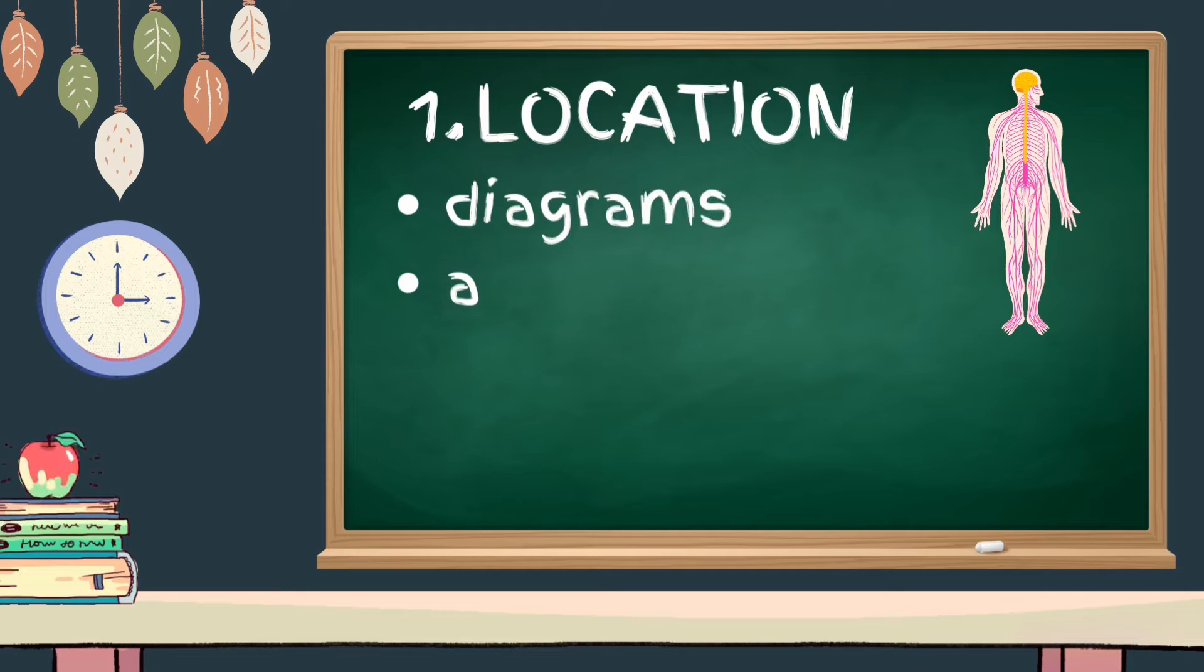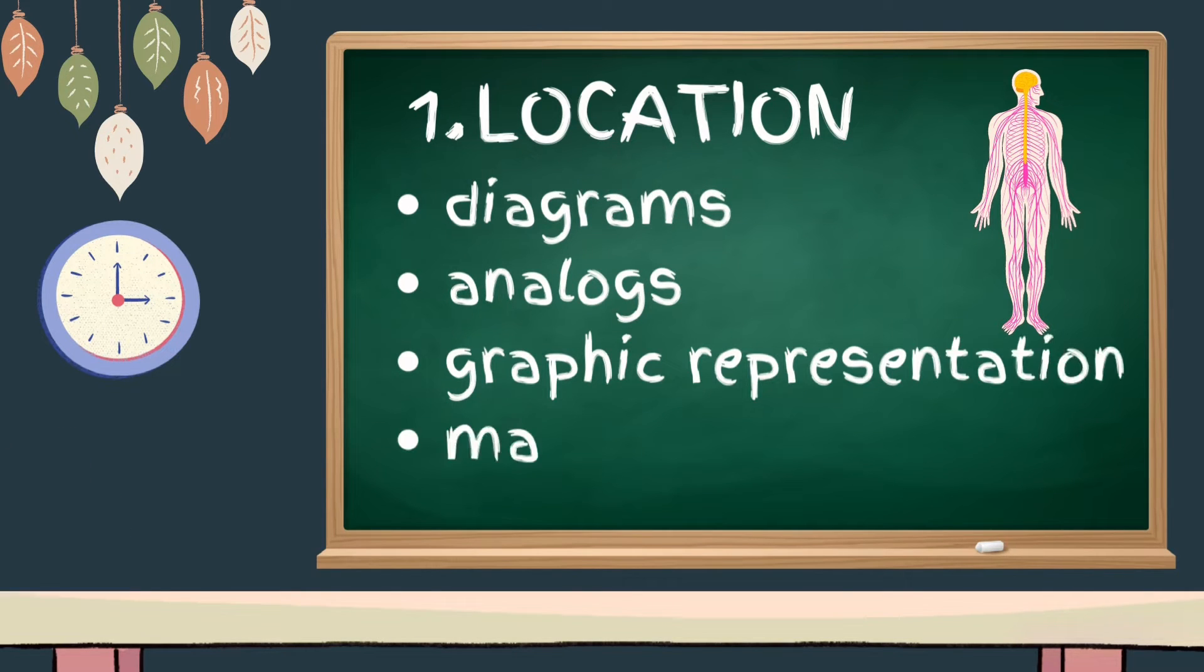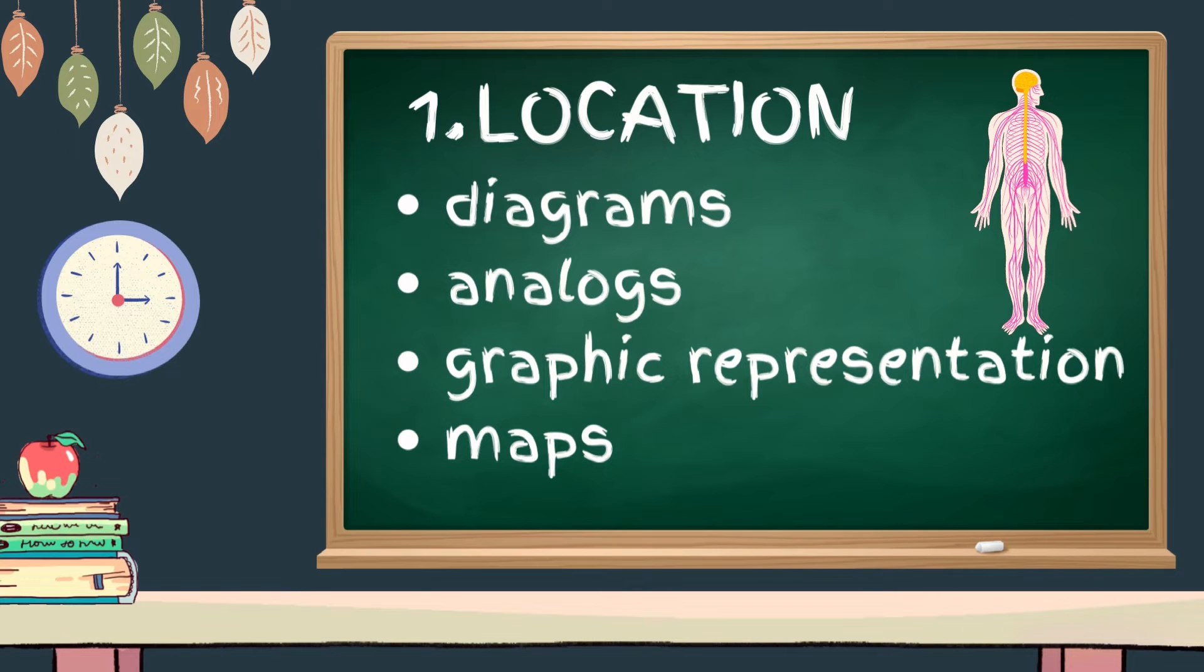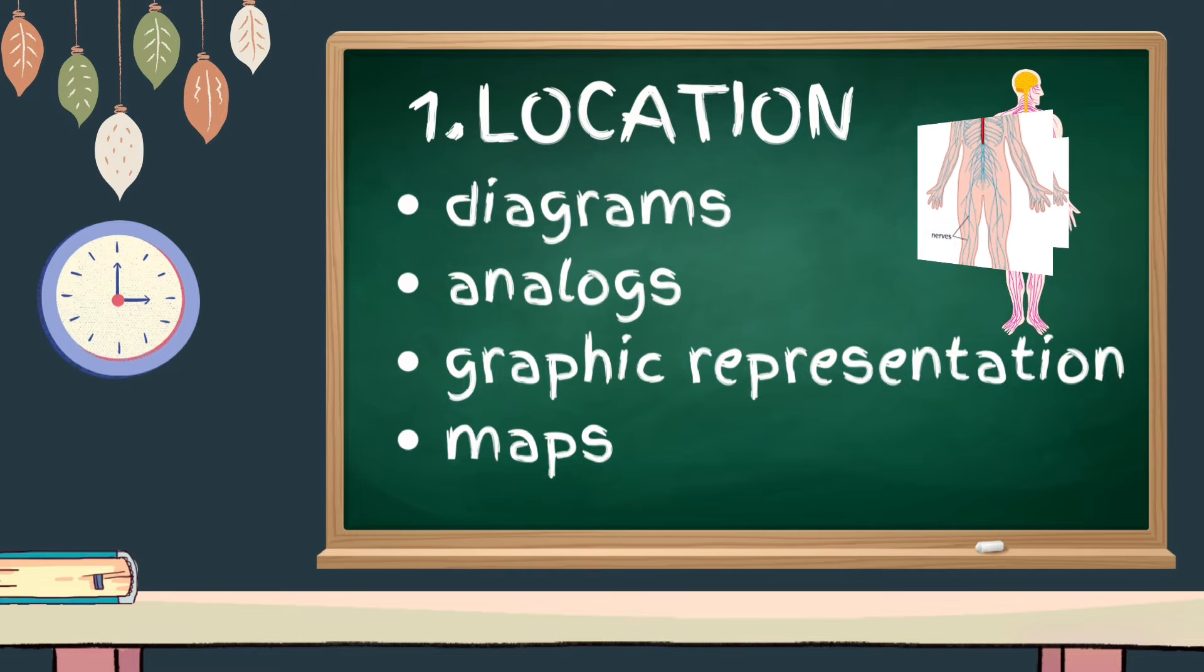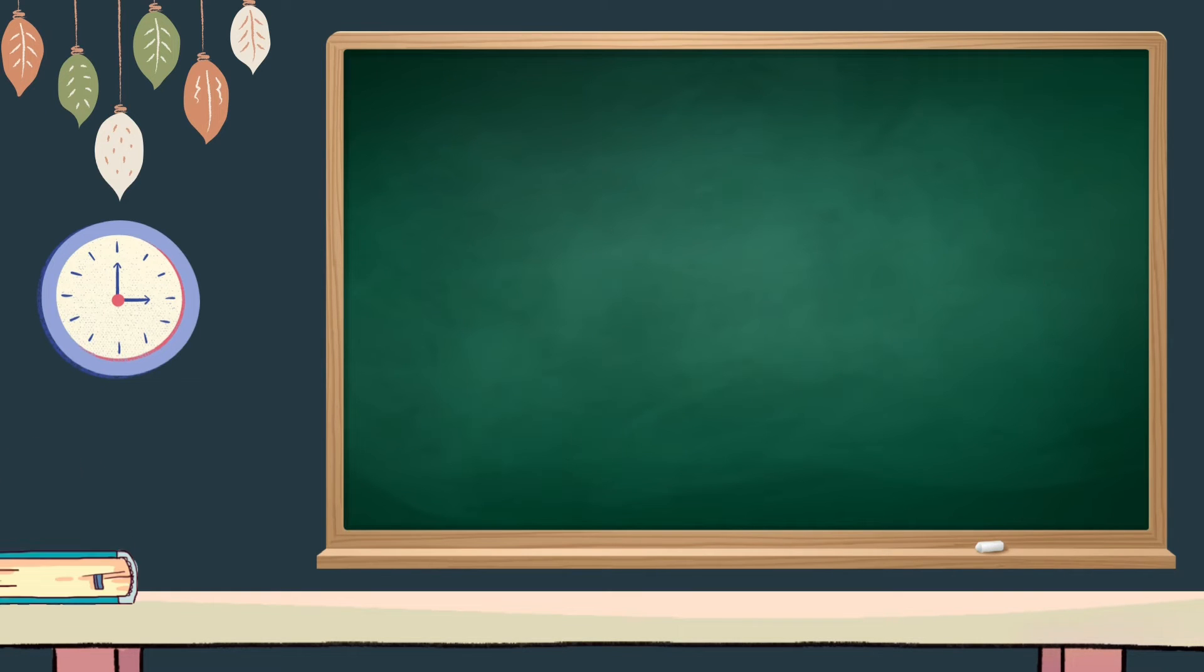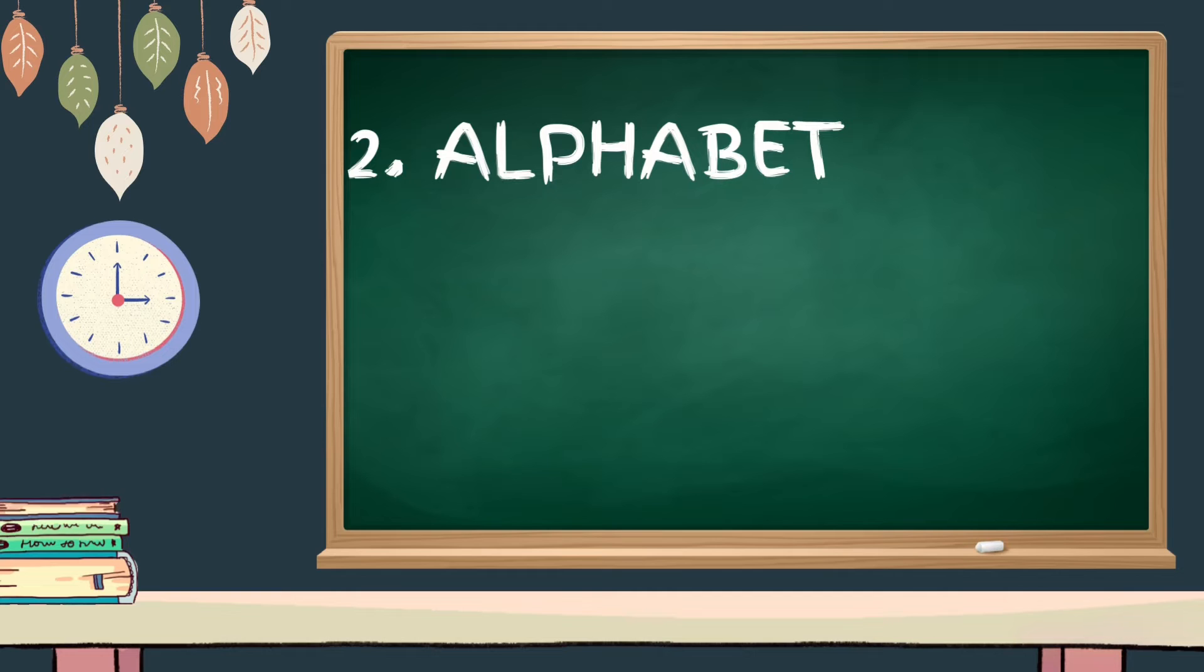First one is location. In location, we can organize information by showing visual representation through diagrams, analogs, graphic representation, and maps. See, for example, the graphic representation of the nervous system.